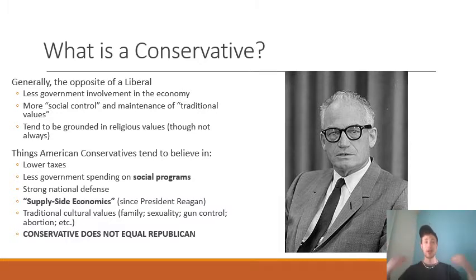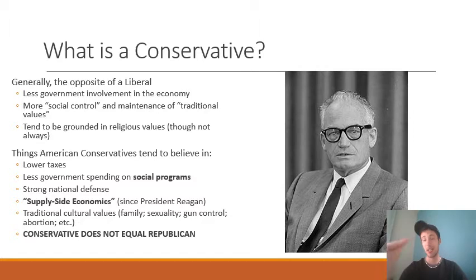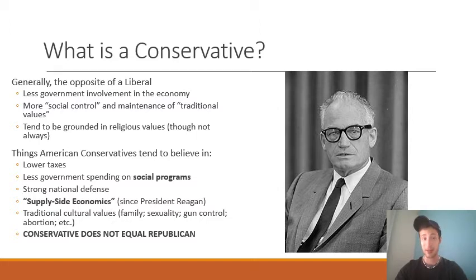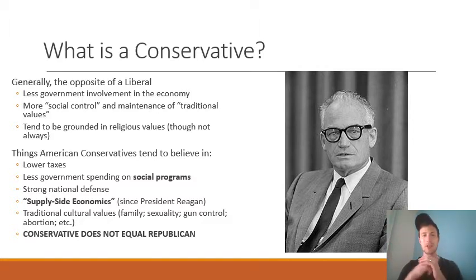So what is a conservative? Generally, a conservative wants less government involvement in the economy — lower taxes, less government regulation, and less government employment, letting private industry do things rather than the government building roads, providing universities and hospitals. On the social side, conservatives tend to favor social control or the maintenance of traditional values, often grounded in religious views. This is Barry Goldwater, usually considered the original conservative to run for the Republican presidential nomination in 1964. He got shellacked by Lyndon B. Johnson, but many of his principles gained popularity throughout the 60s and 70s.